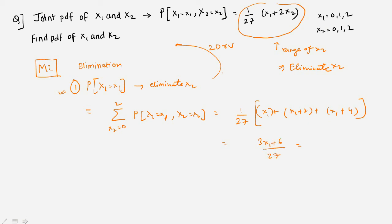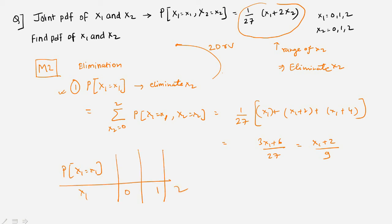Simplifying (3*x1 + 6)/27 by dividing by 3 gives (x1 + 2)/9. We can now make a table: for x1=0 the probability is 2/9; for x1=1 it is 3/9; and for x1=2 it is 4/9. This matches the results from Method 1.